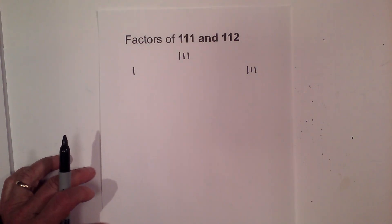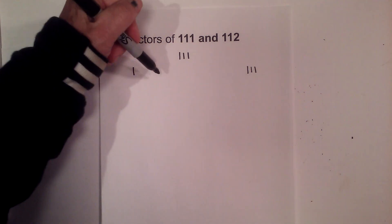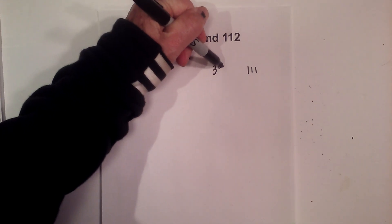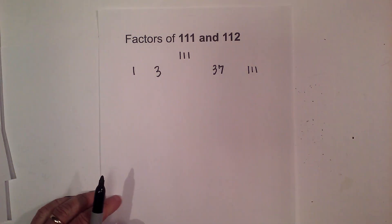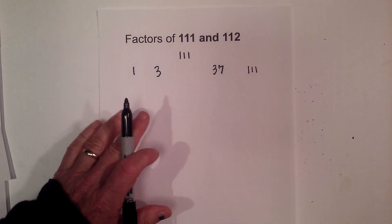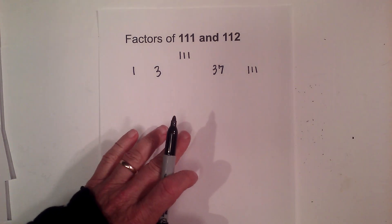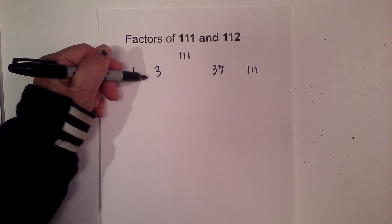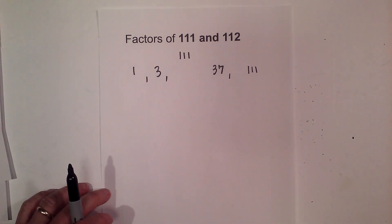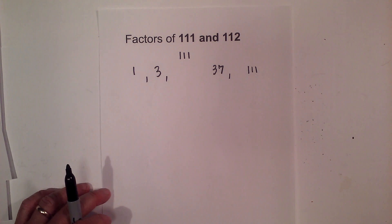Next, 2 will not go into it, but 3 will go into it 37 times. And 4, 5, 6, 7, 8, 9, 10, etc. will not. So the factors of 111 are 1, 3, 37, and 111.